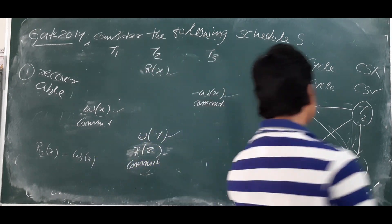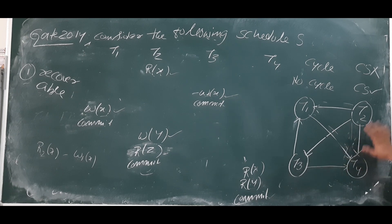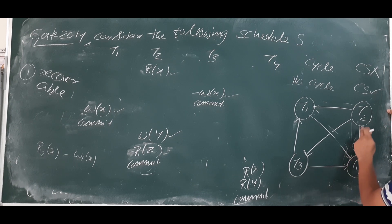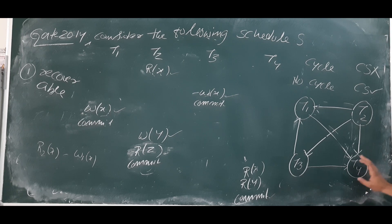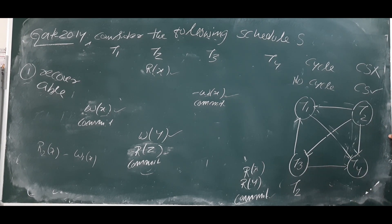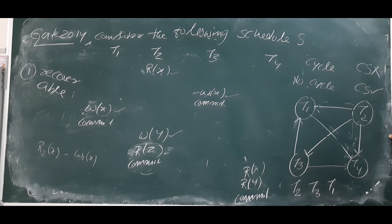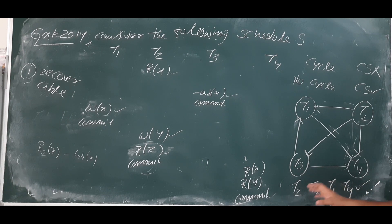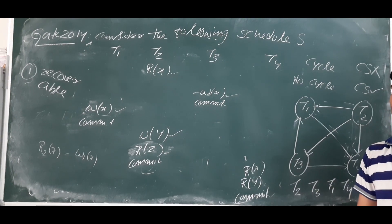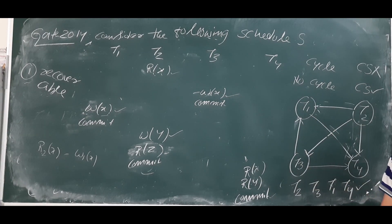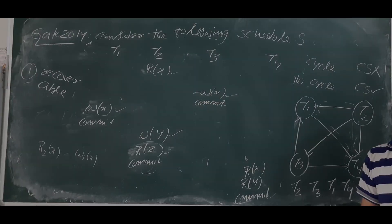Using topological order, we find the equivalent serial schedule. Starting from T2 — from T2 we can go to T3, from T3 there is a direct edge to T1, and from T1 we go to T4. So the equivalent serial order is T2 → T3 → T1 → T4. This is the conflict-equivalent serial schedule. Therefore, the given schedule is both conflict serializable and recoverable.